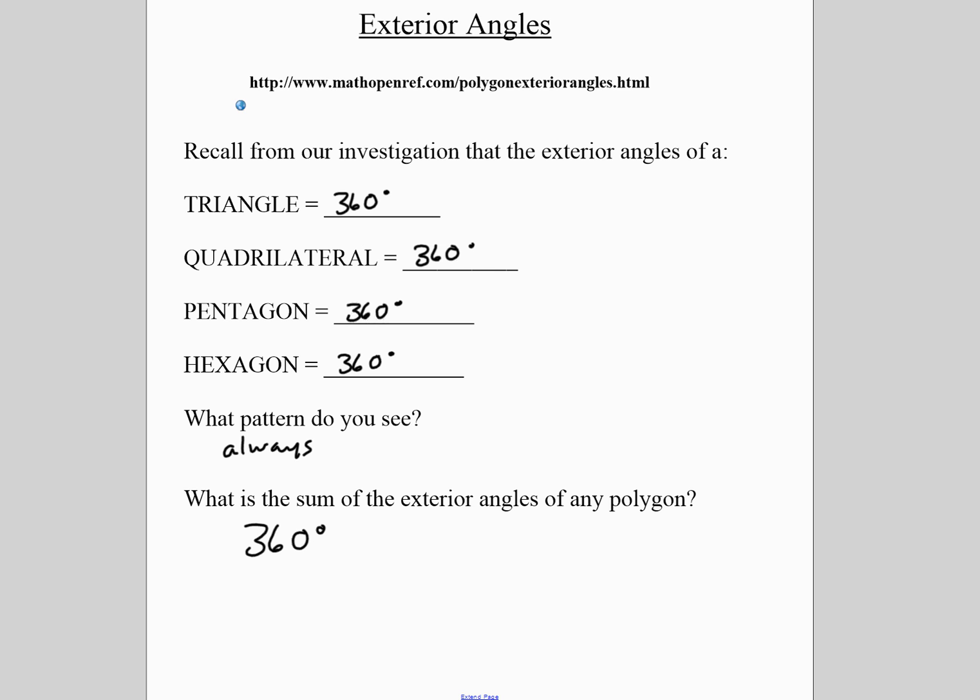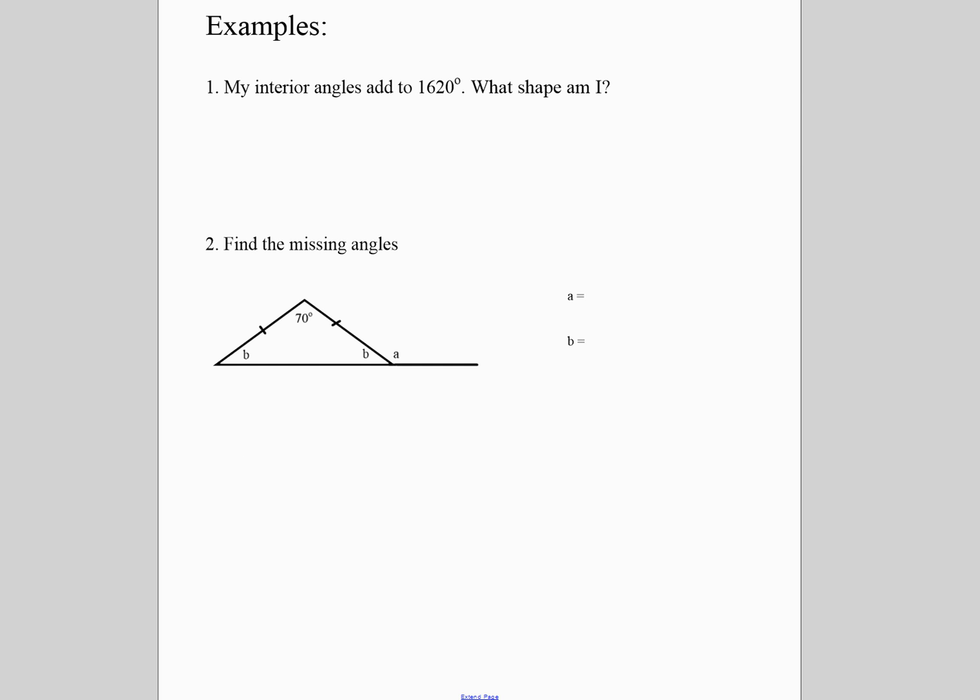Why is all of this important? You can use this to find missing sides. The first type of question you can get is kind of a problem-solving type question. You know what the interior angles add up to, and you have to come up with the shape. Basically, you're going to be working backwards from the formula.